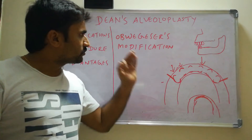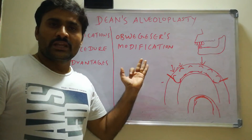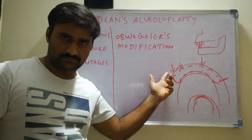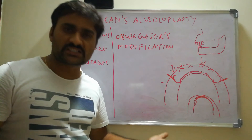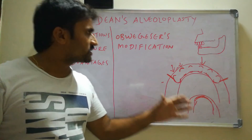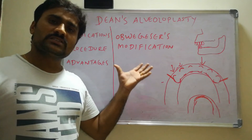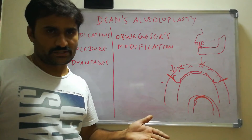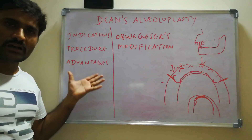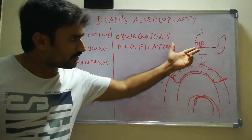These are the two modifications suggested by Obwegeser in Dean's alveoloplasty. This procedure is indicated when there is excess maxillary proclination that cannot be corrected by infracture of the labial cortical plate alone — when there is too large maxillary anterior proclination. This is all about Dean's alveoloplasty. This can be asked as a two-mark or four-mark question. You have to write the indications, surgical procedure, and advantages, and add a note on Obwegeser's modification with diagrams.